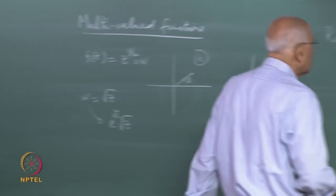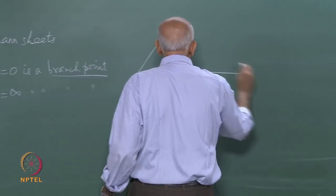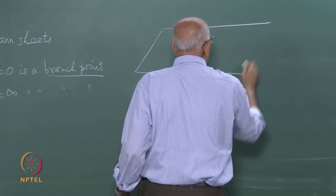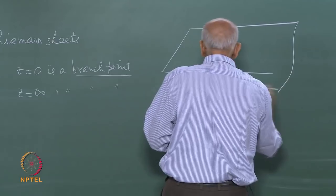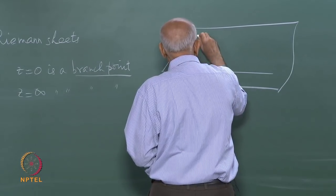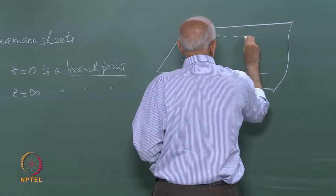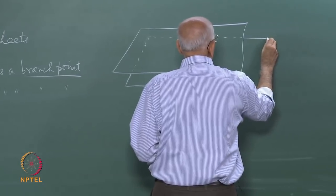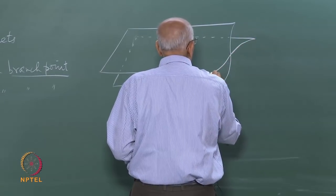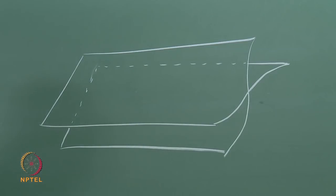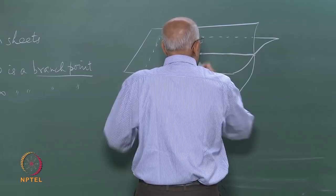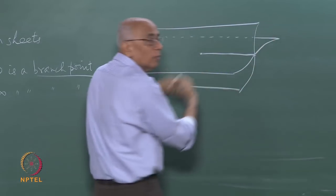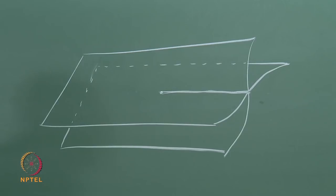This means you make a slit from zero to infinity in the top sheet, and take one end of the slit and glue it to the bottom sheet, and vice versa. Drawing a picture: you get the top sheet glued to the bottom sheet along this slit.